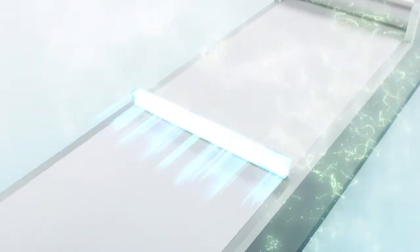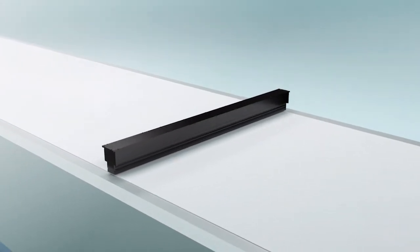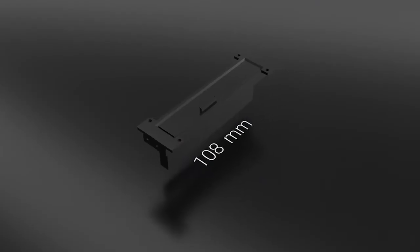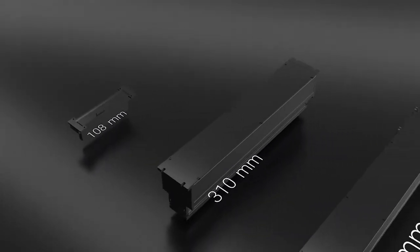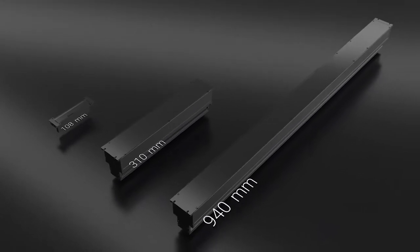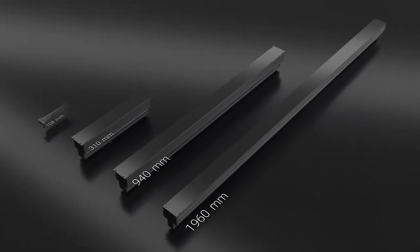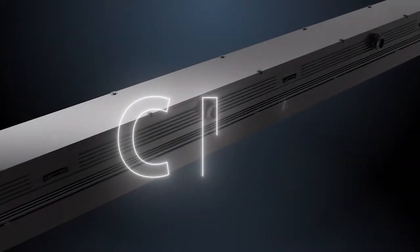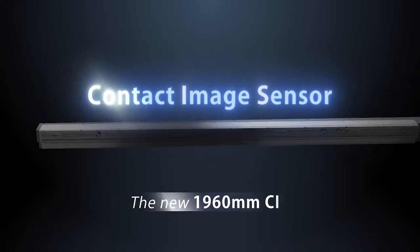WHEC CIS are devices based on a unique concept that eliminates these camera-specific problems. They are available in everything from a compact 108 mm CIS and a 310 mm A3 CIS to a new large format 1960 mm CIS. WHEC CIS series meets a wide range of needs.